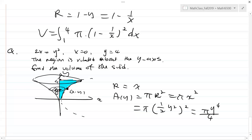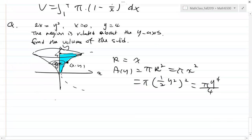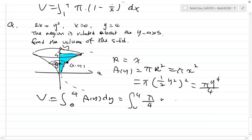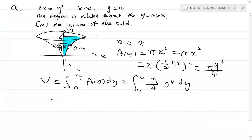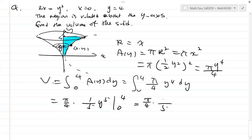The radius is the x-variable. At a point (x, y) on the curve, A(y) = π x² = π x², but expressed in terms of y: since x = y²/2, we get A(y) = π(y²/2)² = πy⁴/4. The volume is integral from 0 to 4 of (πy⁴/4) dy = (π/4)(y⁵/5) from 0 to 4 = π·4⁴/5 = 256π/5.